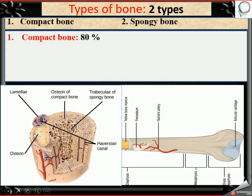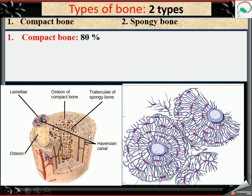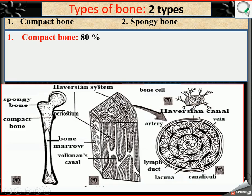Now, the compact bone. To see the structural unit, the structural unit of compact bone is called the Haversian system, also called osteon. Around 80% of bones in the human body are compact bone.